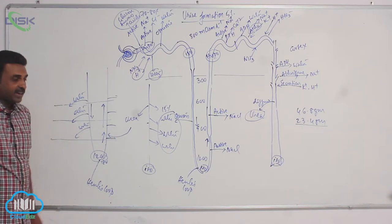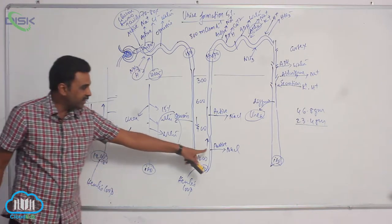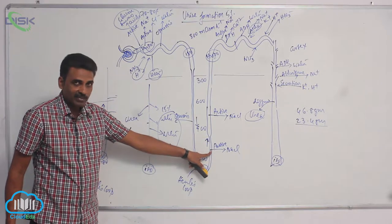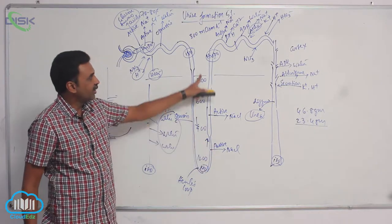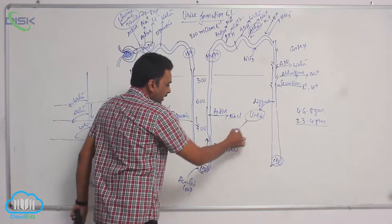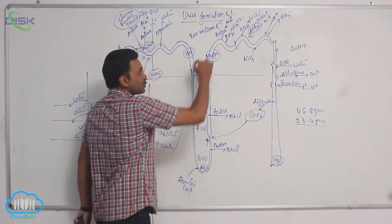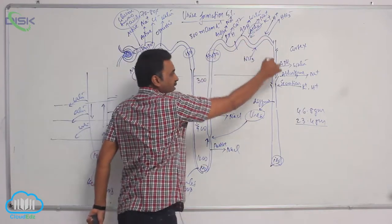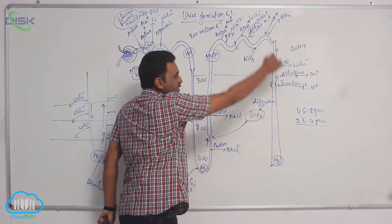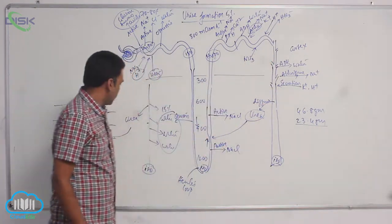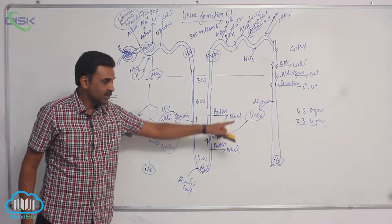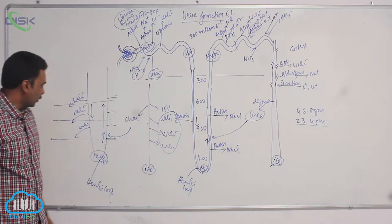This urea then enters back into the thin segment of the ascending limb of the Loop of Henle. So the urea that comes out from the collecting duct re-enters here and cycles back — meaning that urea is effectively moving within this area only. The fate of the salt — sodium chloride — is different.